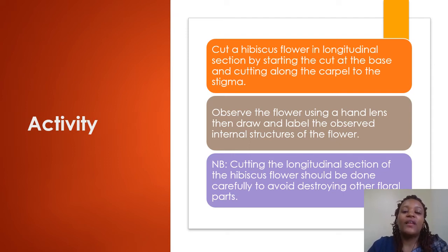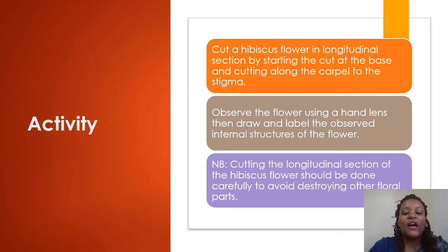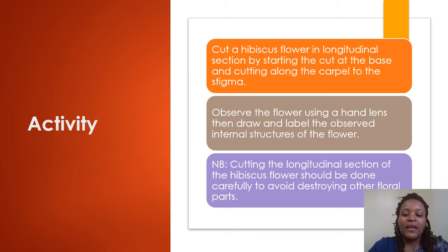At your own free time, when you see a flower in your kitchen garden, just cut it — cut a longitudinal section of it. Start cutting from the base and cut along the carpel to the stigma. Then observe it. Even if you don't have a hand lens at home, just observe the flower, try drawing it, and observe the internal parts. Be careful not to destroy the other floral parts.